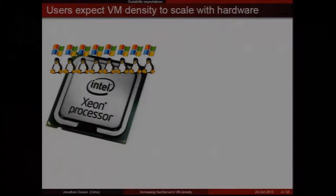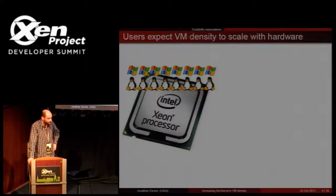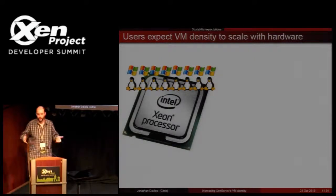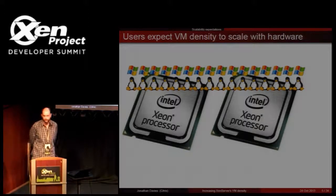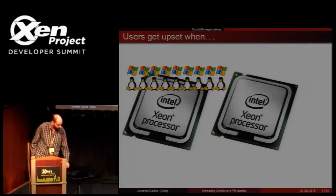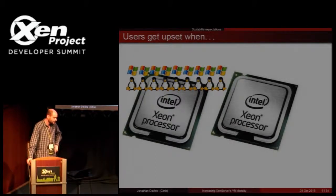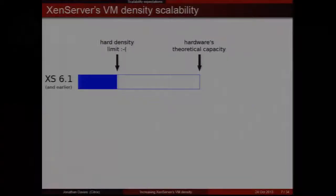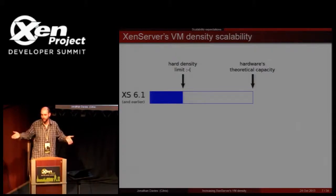Some people just want to run one or two VMs, but we've got a lot of customers who really care about getting a lot of VMs on their servers. If you can run N VMs on a one-socket machine, then if you've got a two-socket machine, people expect you can run 2N VMs. People get upset if you can only run N or N plus a little bit when they've spent double the money on hardware that's double the size.